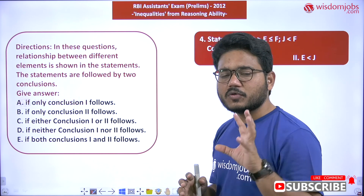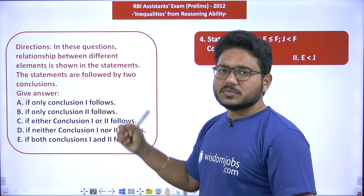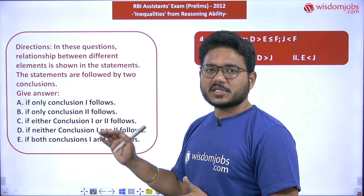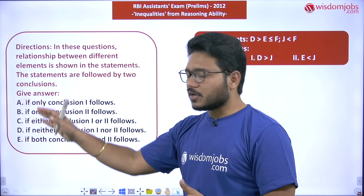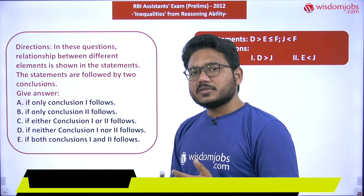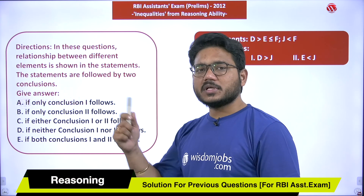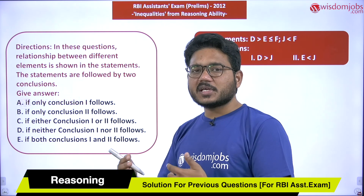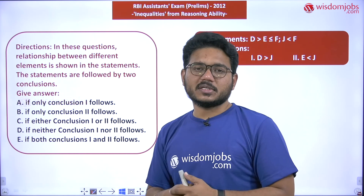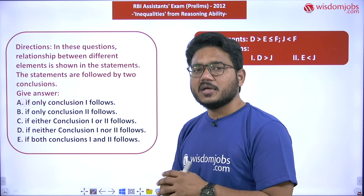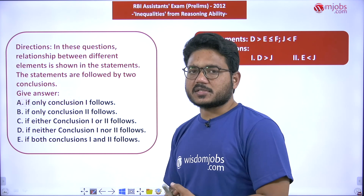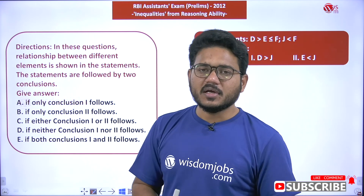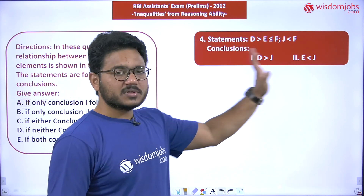We have got a total of five questions in that paper. We all know the basic directions of how they are given. We need to check the statements and conclusions and choose the appropriate option — whether those conclusions follow the statement, do not follow, or whether there is an either-or case. That either-or case is very important in the inequalities topic. One among these options has to be chosen.